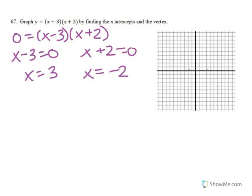Then I need to find my vertex. My vertex is going to be in the middle of those two. In order to find the middle, I add them and then divide by 2. 3 plus negative 2 is 1 over 2.